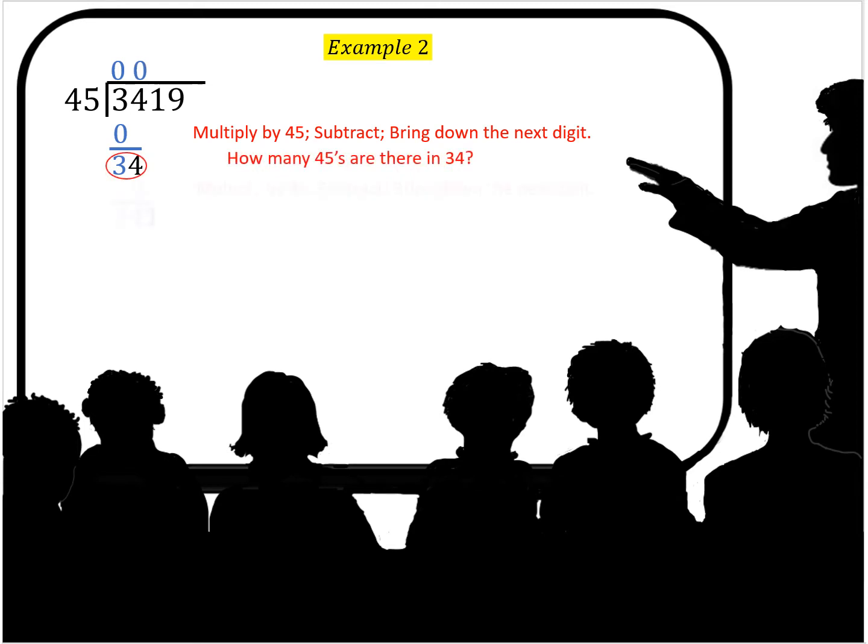How many 45s are in 34? There aren't any. It's zero. Multiply zero times 45, you get zero again. You subtract and you get 34. You bring down the one.